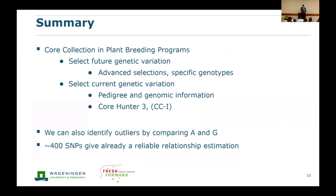In summary, for the core collection part: you have to be careful not to just select the current genetic variation, but also select your future genetic variation that's present in your advanced selections and specific genotypes. Then you should complement it with your current genetic variation using the tools already available from gene bank research. You should use both pedigree and genomic information to get the best of both worlds. One thing we found is that you can identify outliers by comparing these matrices, and you don't need a lot of SNPs to reliably estimate the genomic relationships.